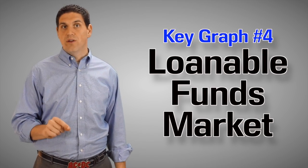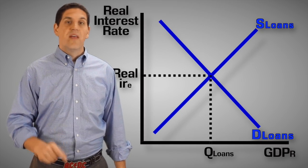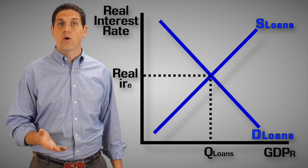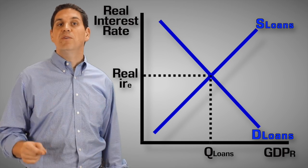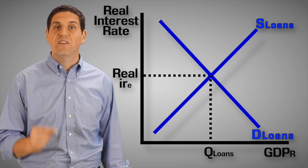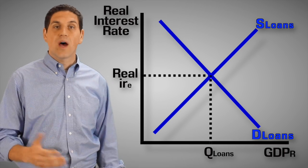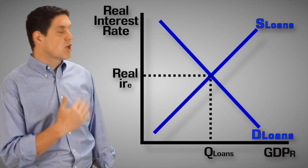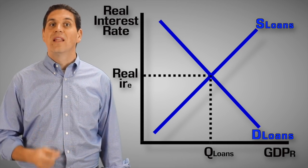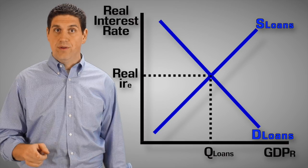The least important graph that you need to know is loanable funds. This is the demand and supply for loans. The vast majority of the time, this graph is used to show the idea of deficit spending. When the government goes out and borrows, it increases the demand for loans, leading to higher interest rates, causing something called crowding out.